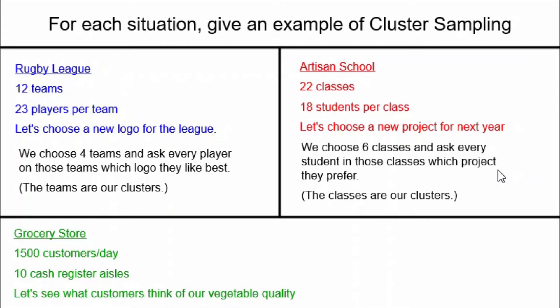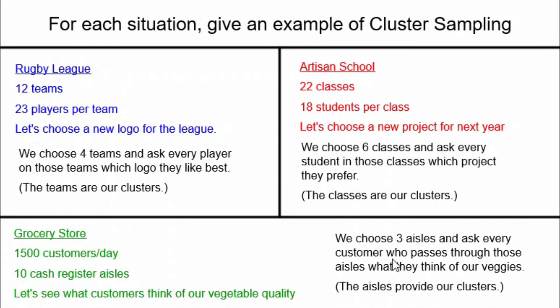It might be obvious that with the rugby league the teams would be clusters, and with the artisan school the classes would be clusters. So let's look at our third example — the grocery store. It has 1500 customers per day, there are 10 cash register aisles, and we want to know what customers think of the vegetable quality. These customers aren't divided into groups the way teams or classes are, but we can still make clusters. We choose three of the cash register aisles and ask every customer who passes through those three aisles what they think of the veggies. That way the aisles help provide the clusters we need for cluster sampling.